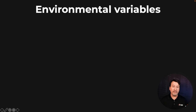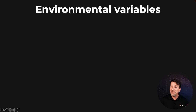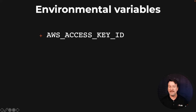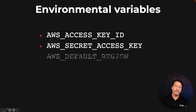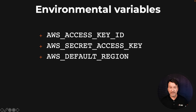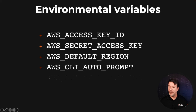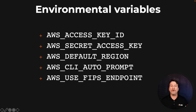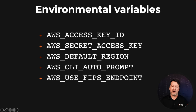Now, environmental variables — a lot of folks don't like working with these because it feels like an old school way of doing things, but they're still useful sometimes. Like for setting your access key, secret access key. You can also set up a default region, a CLI auto prompt, and things like FIPS if you're working in a federal environment where you have to use FIPS 140. These are all completely acceptable AWS environmental variables. You can find the entire list on the AWS website.